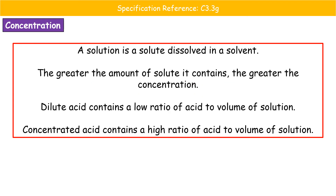We now consider concentration. The acids we use in school labs are solutions — a solute dissolved in a solvent. The greater the amount of solute, the greater the concentration. Two terms: dilute means a low ratio of acid to the volume of solution; concentrated means a high ratio of acid to volume — a high mass of solute dissolved in a relatively small volume.